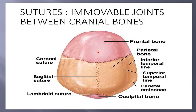This is the frontal bone and this is the parietal bone. The frontal bone articulates with the parietal bone by the coronal suture. We have a paired parietal bone, and the two parietal bones articulate together by the sagittal suture.